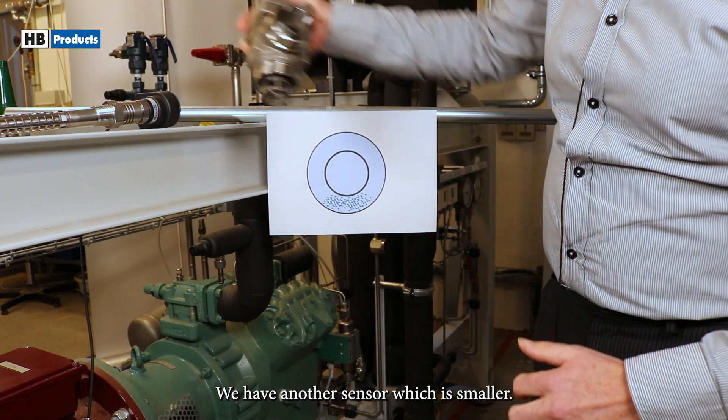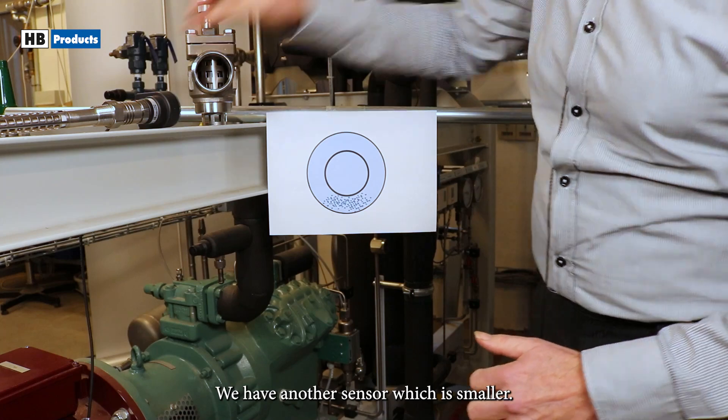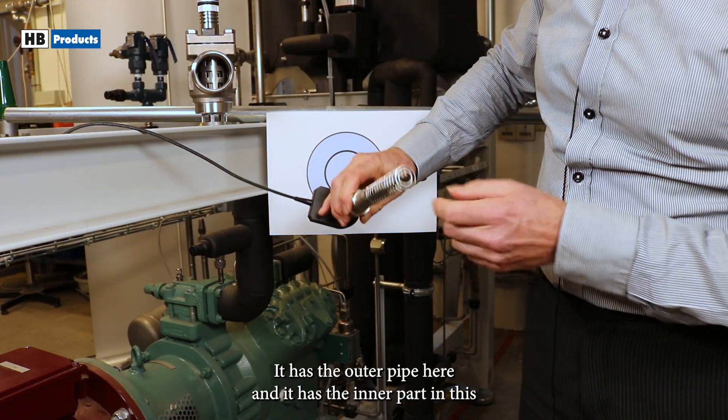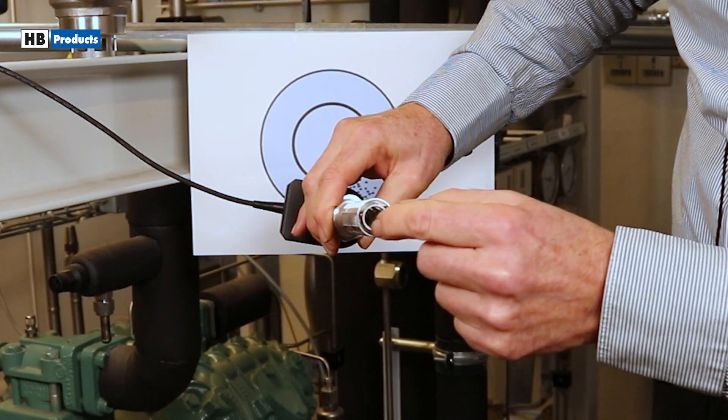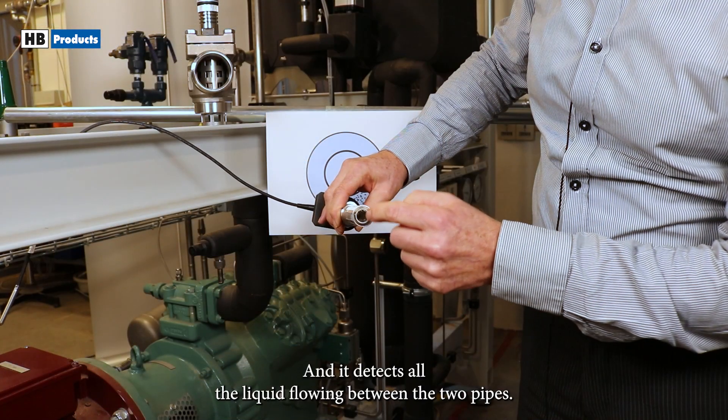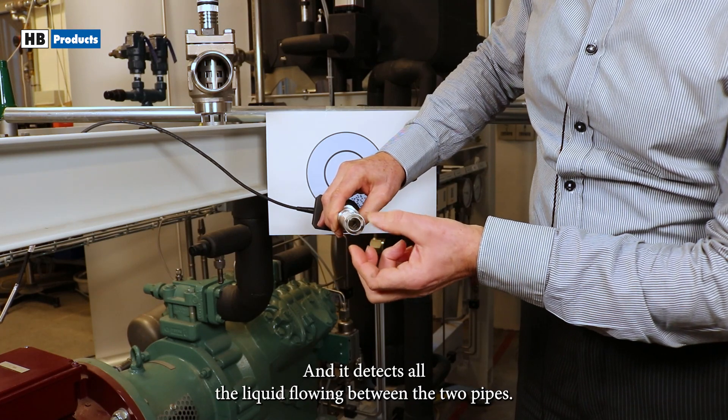We have another sensor which is smaller. It has the outer pipe here and it has the inner part in this area here, and it detects all the liquid flowing between the two pipes.